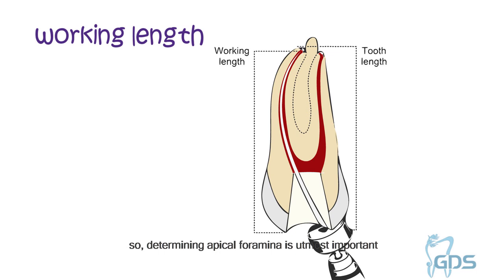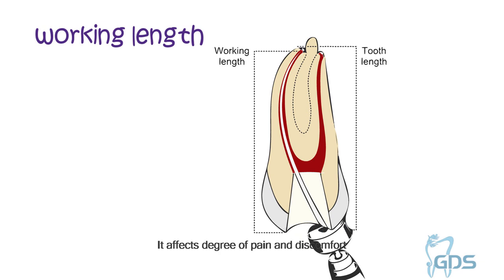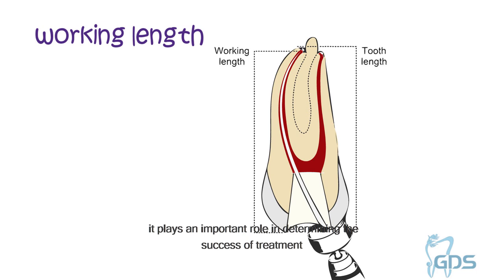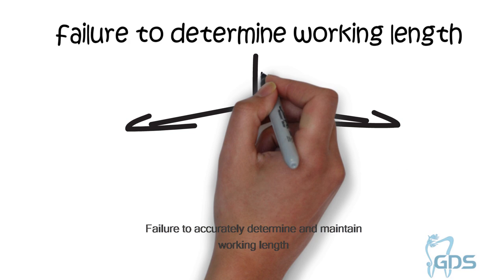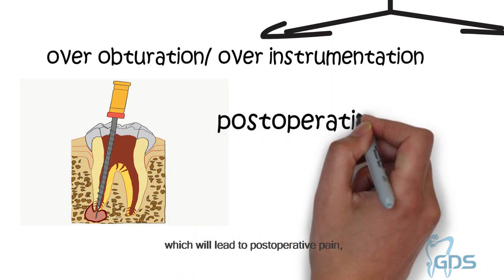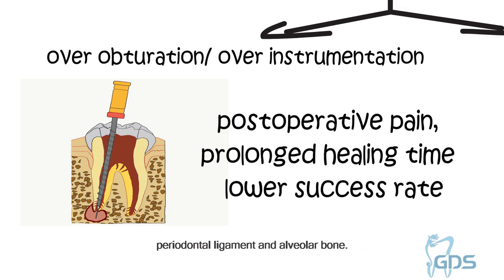Determining the apical foramen is of utmost importance because it gives us knowledge of how far we have to instrument the canal. It affects the degree of pain and discomfort which the patient will experience following the appointment, by virtue of over and under instrumentation. If placed within correct limits, it plays an important role in determining the success of the treatment. Failure to accurately determine and maintain working length may result in the length being over normal, which will lead to postoperative pain, prolonged healing time, and lower success rate because of incomplete regeneration of cementum, periodontal ligament, and alveolar bone.